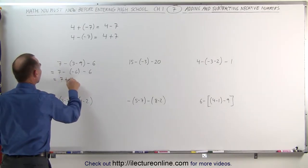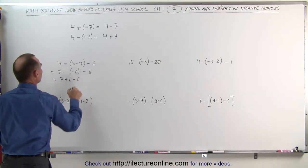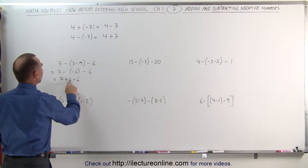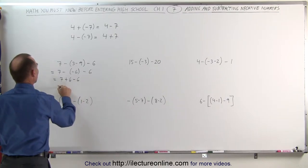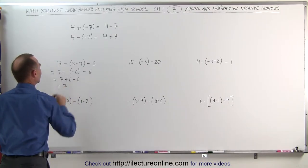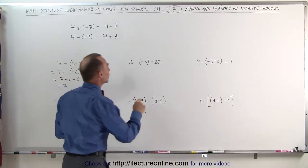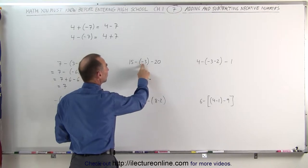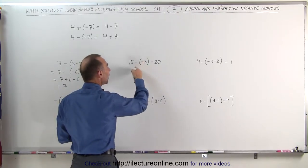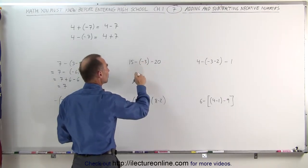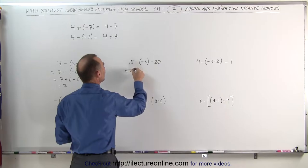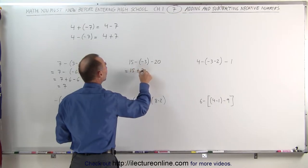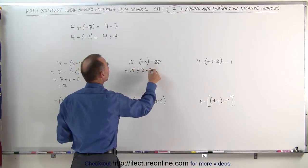And then we have a minus 6 there. The next thing is we want to get rid of the parentheses. Here we're subtracting a negative number, which means that's the same as adding the number. This becomes 7 plus 6 minus 6. Of course, 6 minus 6 is 0, so this becomes 7.